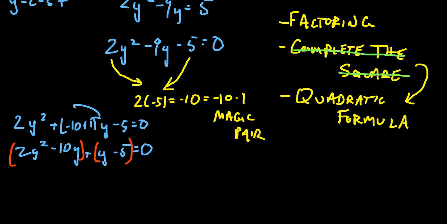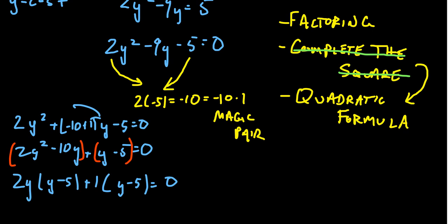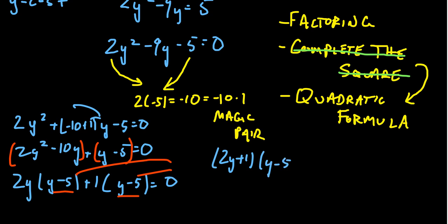In each individual group, factor out the greatest common divisor. From 2y² − 10y, you can factor out 2y, leaving (y − 5). In the second group, the greatest common divisor is just 1, so you factor out 1 and are left with (y − 5). Both groups share the factor (y − 5), so you can factor that out — even though it's a binomial — and end up with (2y + 1)(y − 5) = 0.